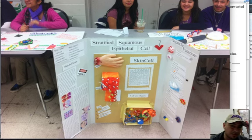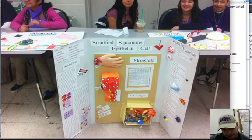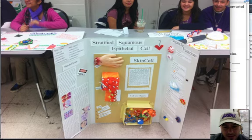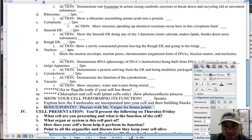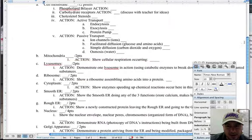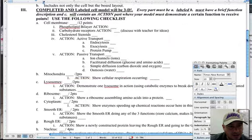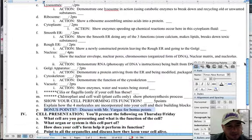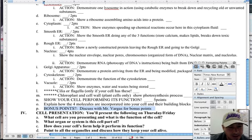So once you've got your blueprints ready, you can start building your cell — get creative. Make sure you follow the checklist. Do not forget you want to follow this and make sure you have everything on here: A through K, and then don't forget N, O, and P.